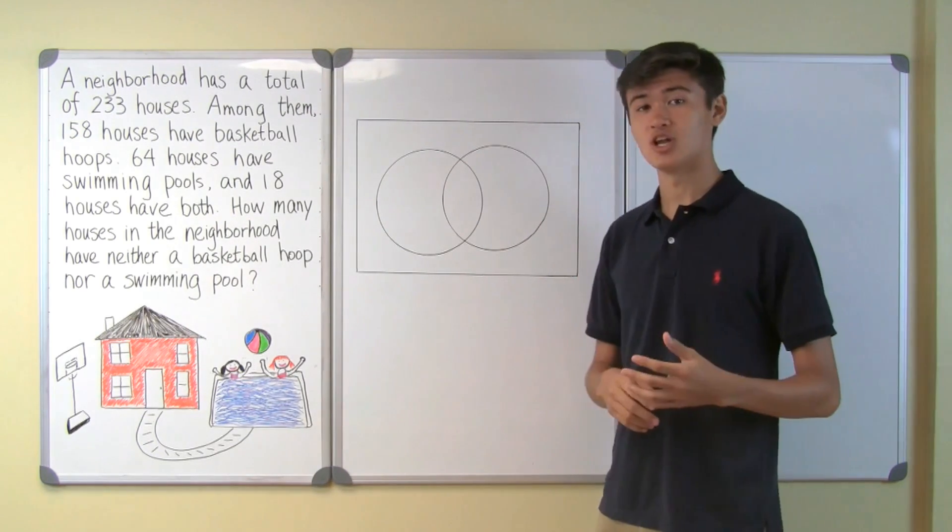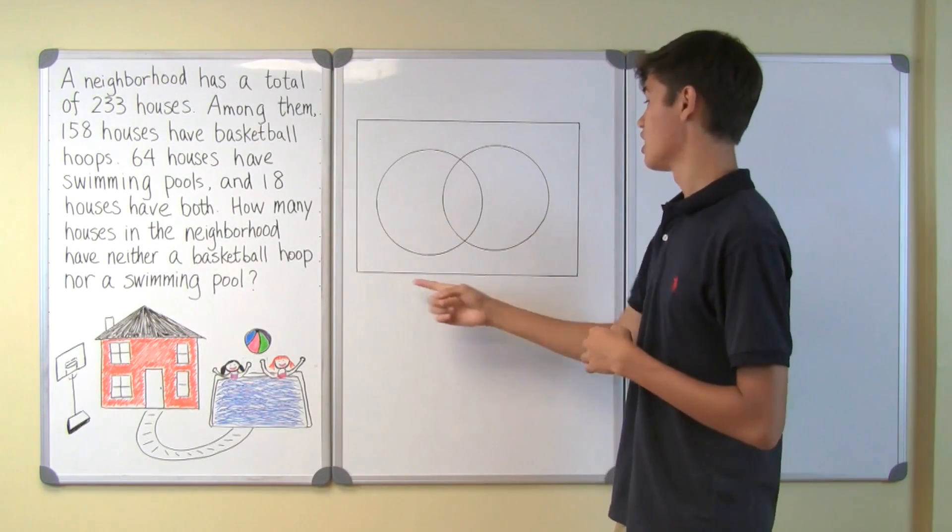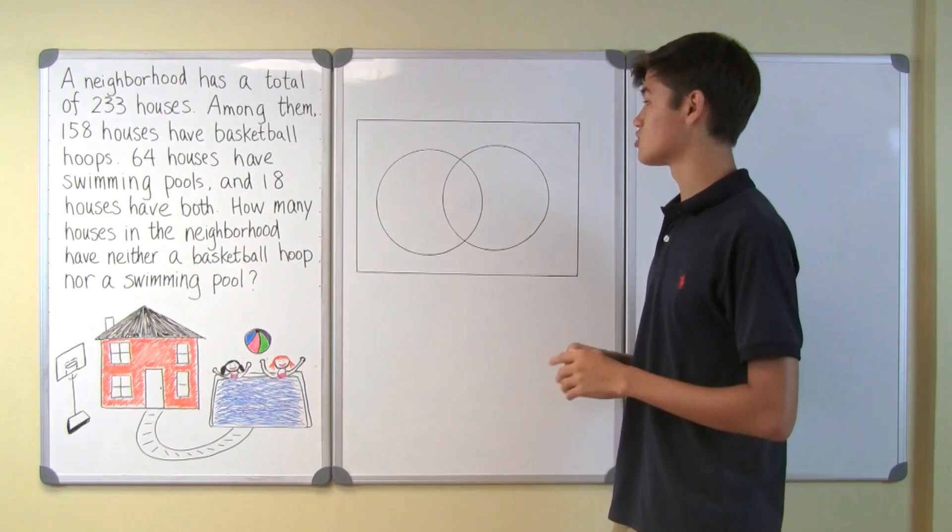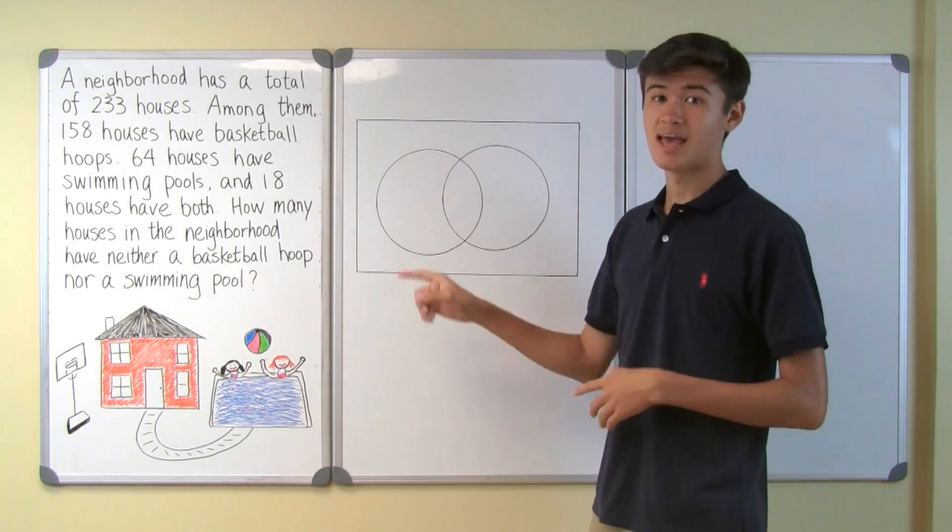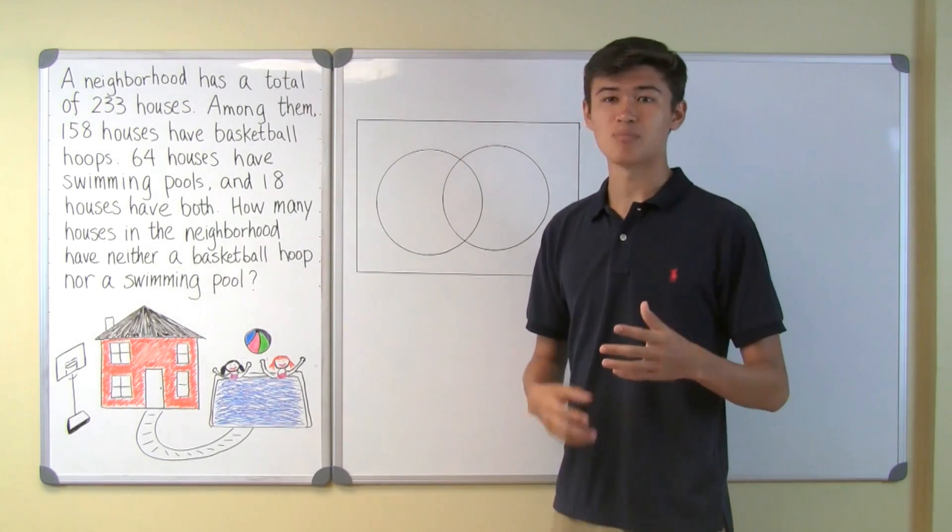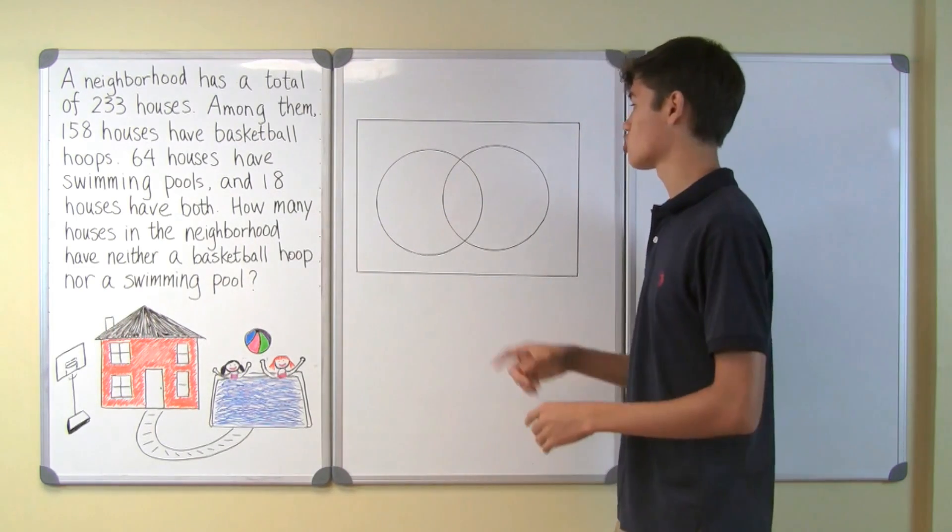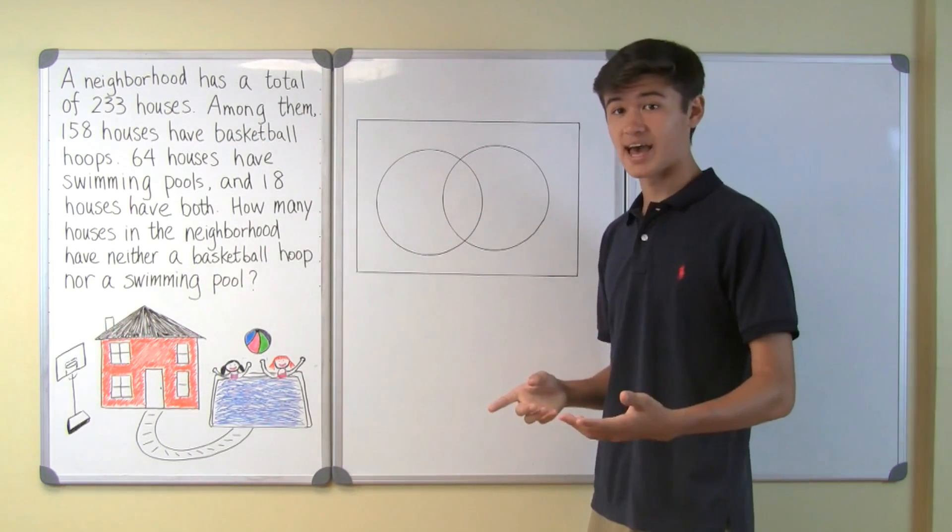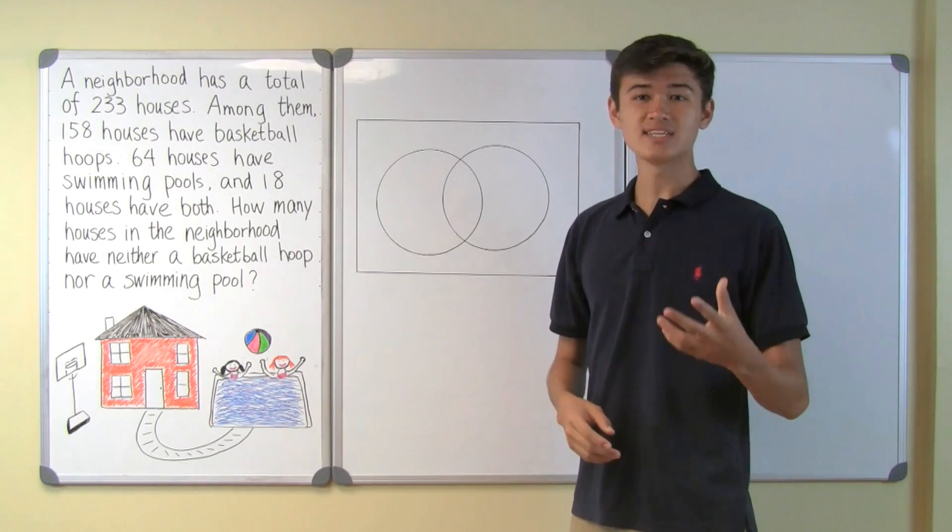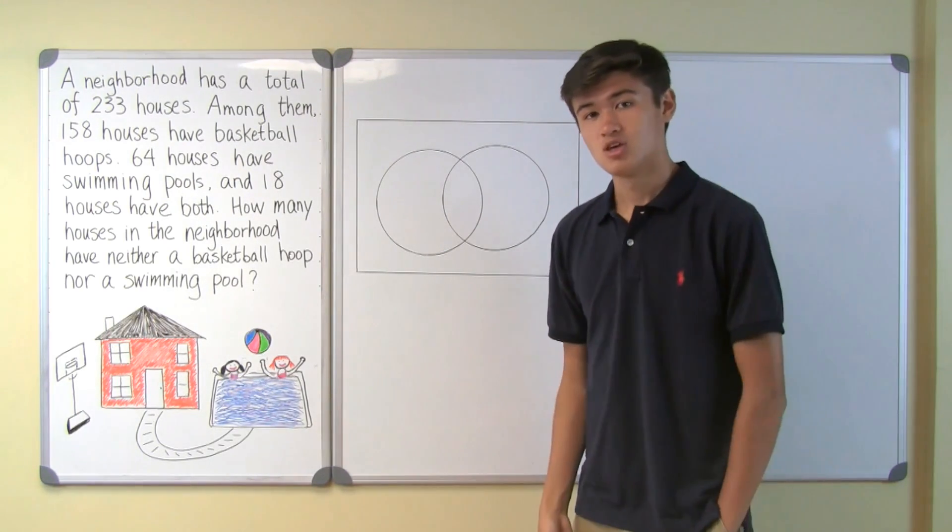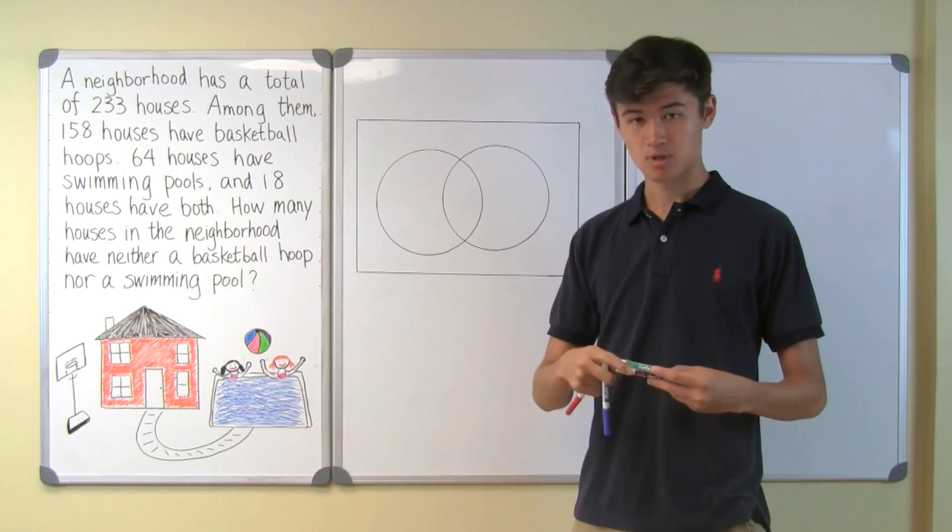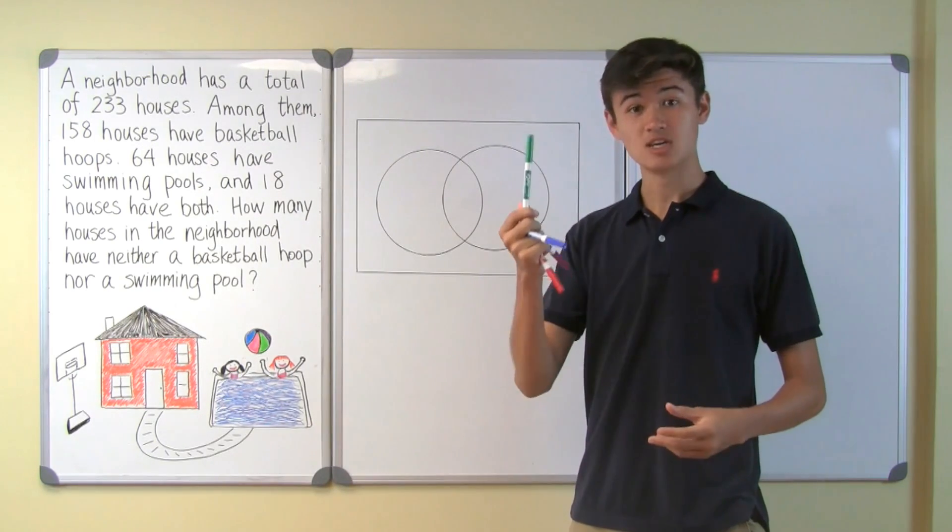So first, to represent the situation, we drew a rectangle. This rectangle will represent all 233 houses. Next, we drew a circle to represent houses with basketball hoops, and then we drew another circle to represent houses with swimming pools. Since there are shared members between the groups of objects, the two circles intersect. The two circles break the rectangle into many regions. We shade different regions into different colors, like red, blue, purple, and finally green.